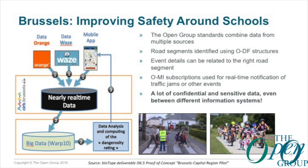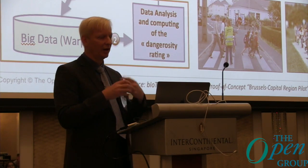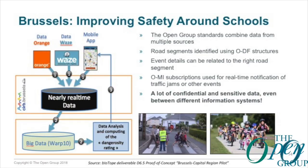Another use case is in Brussels, focused on improving safety around schools. An app has been developed for school children — they use it on their phones and have allowed us to follow their location, which is pretty sensitive information. We are also getting location information from operators in Brussels. Children have the possibility of clicking and indicating if they feel safe or unsafe when they come to a crossroads or traffic light.